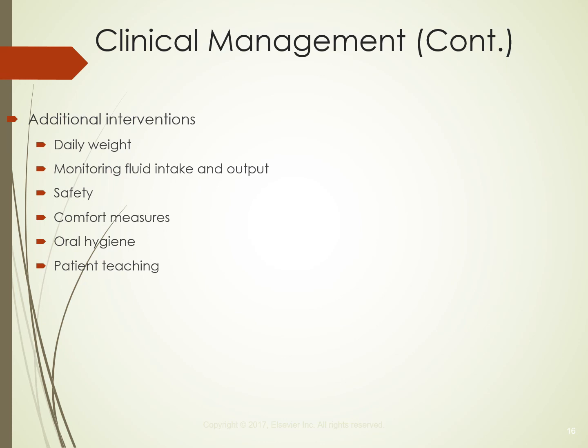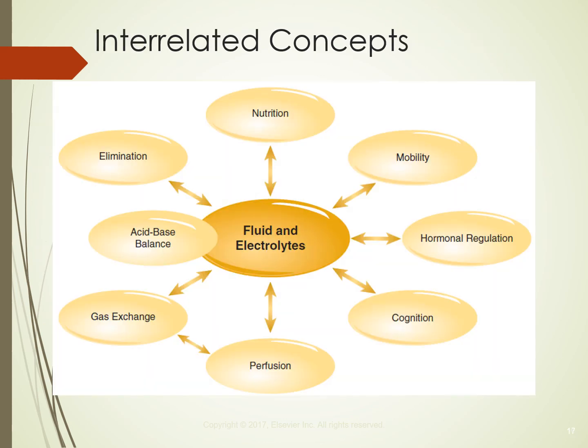Other interventions include oral hygiene — frequent oral hygiene for patients with dehydration — comfort measures for nausea and vomiting or any electrolyte imbalance, and patient teaching on all of the above. Interrelated concepts for fluid and electrolyte management include nutrition, mobility, hormonal regulation, cognition, perfusion, gas exchange, acid-base balance, and elimination — all interrelated as shown by the bidirectional arrows.